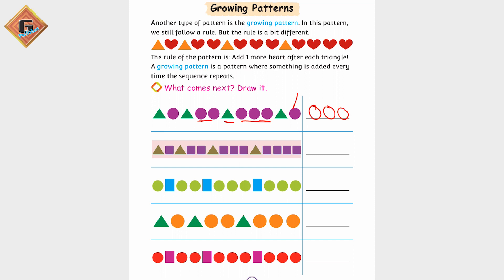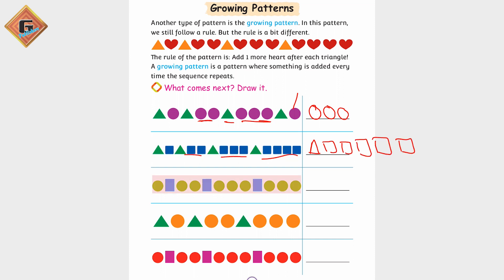Here we have one square, this square two, this square three, here we have four. So now what do we have? One, two, three, four and five. This is one, two, three and four.